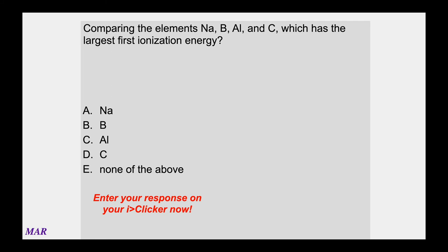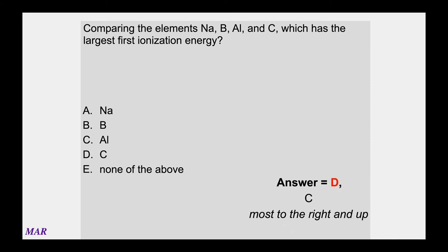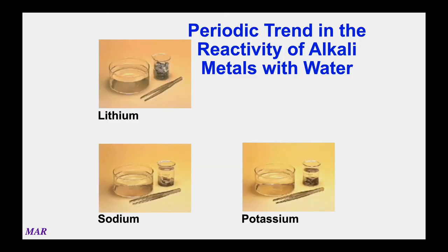Another problem: comparing sodium, aluminum, boron, and carbon — which has the largest first ionization energy? You want the element most up and to the right on the periodic table. Sodium is most left and down, then aluminum, then boron, and carbon is most up and to the right. So carbon has the highest first ionization energy. Overall this is a pretty good pattern to follow.